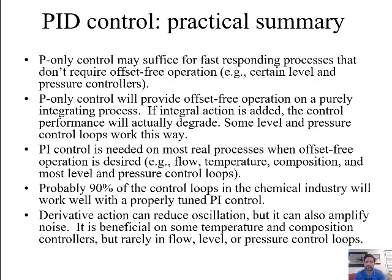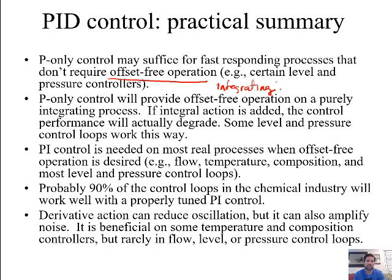Here's a practical summary. P-only control is sufficient if you have a fast-responding process that doesn't require offset-free operation — such as level and pressure controllers. An integrating process is one that doesn't reach a new steady state when you make a change. If you're controlling an integrating, fast-responding process like level or pressure, P-only control will give the best performance. If integral action is added, control performance can decrease because it's not responding as fast as possible.